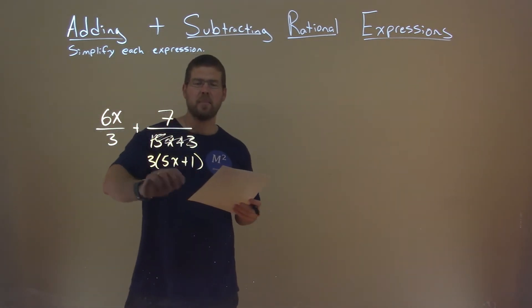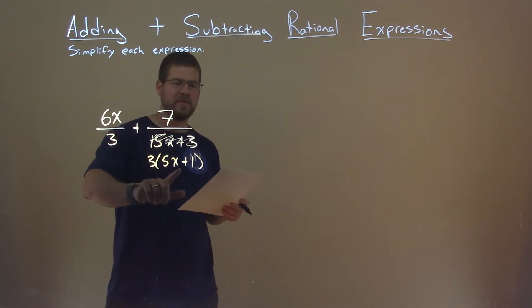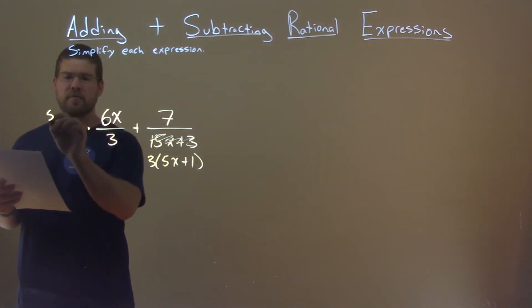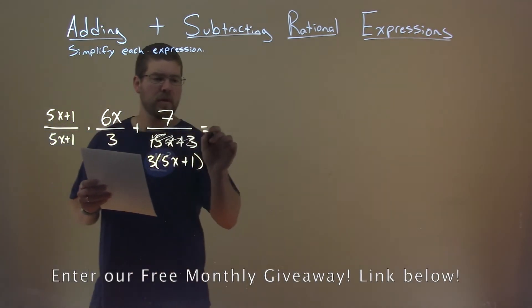Now, we want to have a common denominator here. 3 and 3 are pretty close, but there's still that 5x plus 1 here. If I multiply the first fraction by 5x plus 1 over 5x plus 1, the denominators would then be the same.